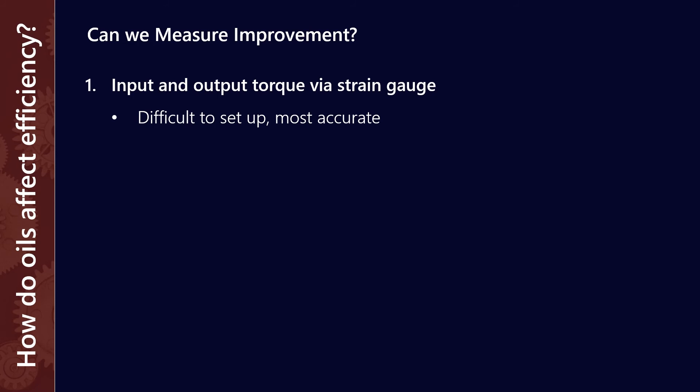The last question is, can we actually measure that improvement in the real world? And the answer is yes. The first way, which is the most accurate, is to set up a measurement of both the input and the output torque directly via some kind of strain gauge system. There are many torque analyzers available on the market, but they are quite expensive, and it does take a long time to set up.